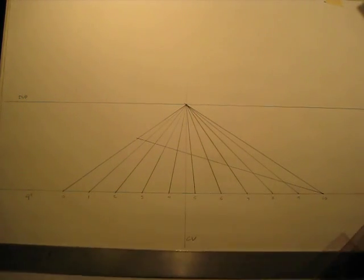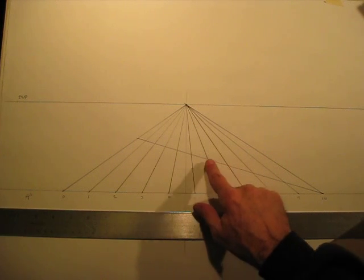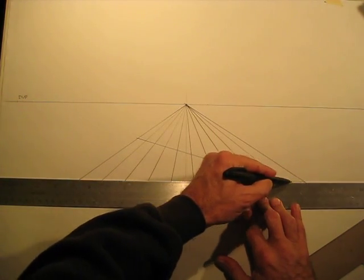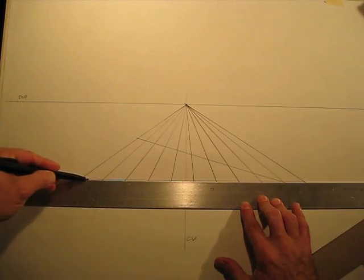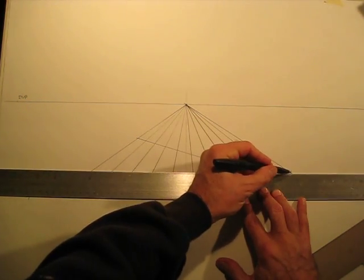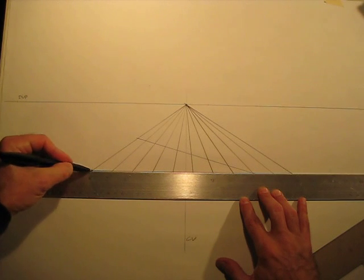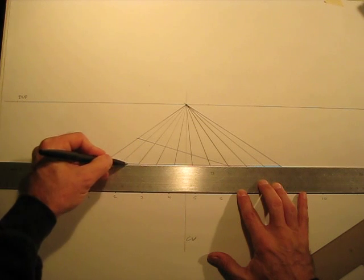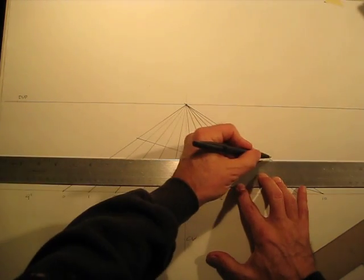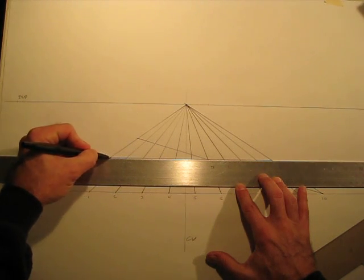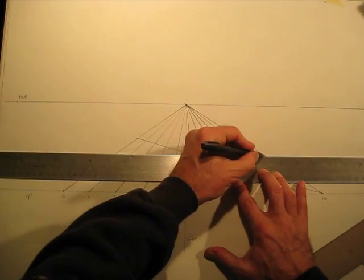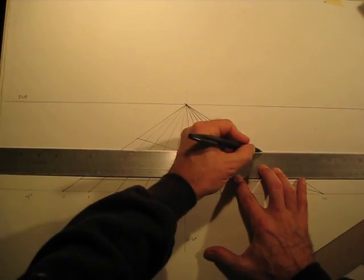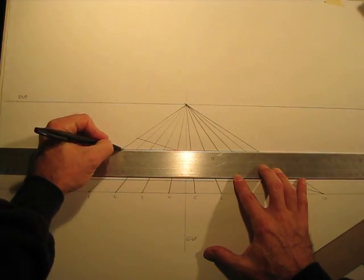So now I'm going to use the T-square, and everywhere there's an intersection along these orthogonals, I'm going to draw a horizontal line from one side to the other side of the grid. And I should have a nice floor going back into perspective. And see, very quickly, the distance between these lines decreases as we go back into perspective.